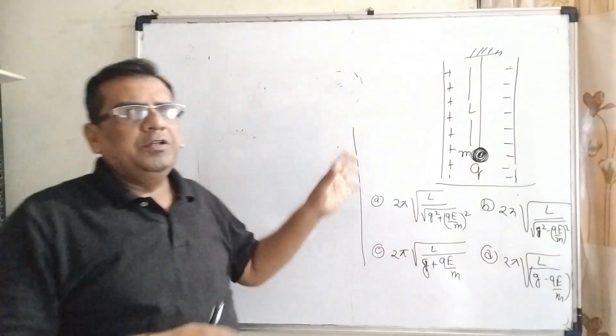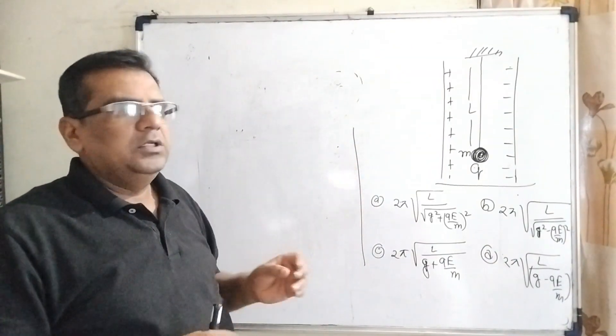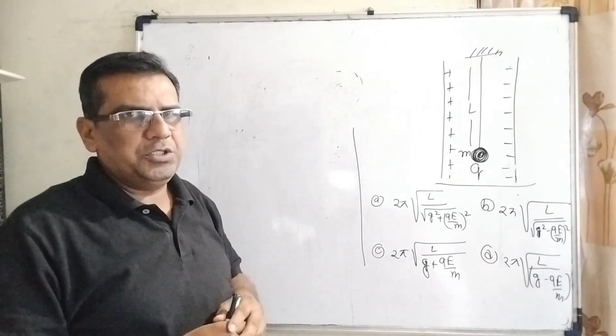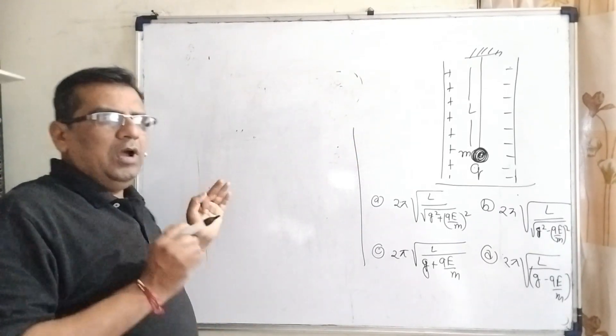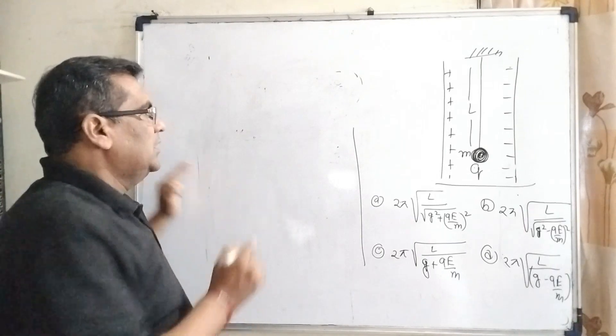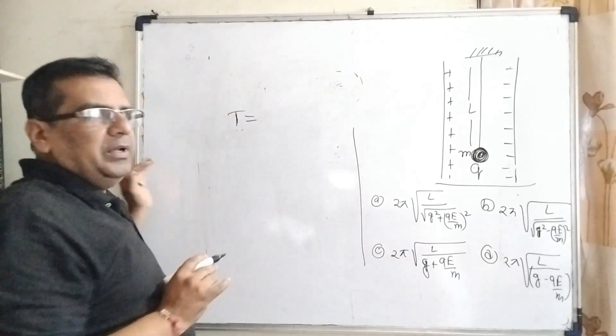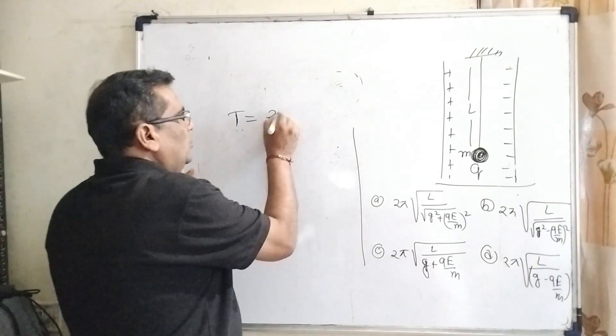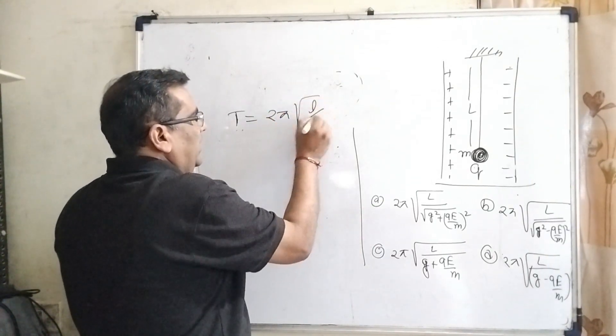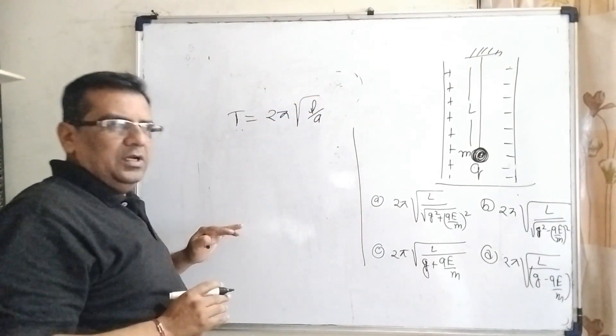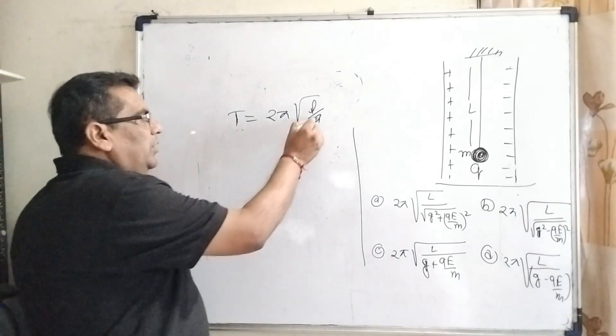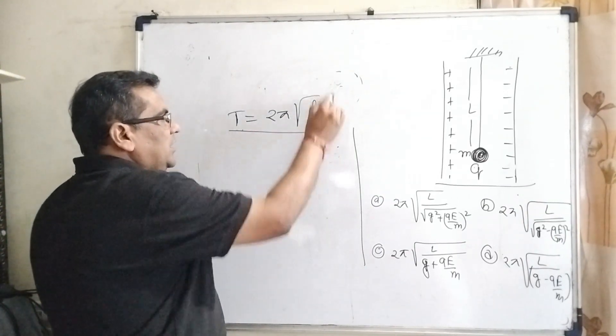Before solving the question, we have to think about the central idea or key points of this question. As you know, you have learned in your previous class the time period of an oscillating simple pendulum: T = 2π√(L/g). So therefore, here we have to find out the resultant acceleration.